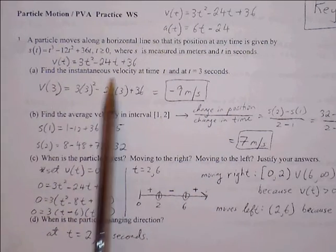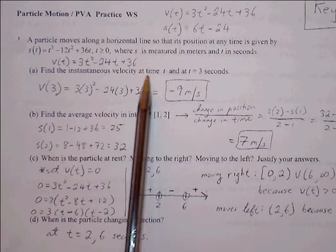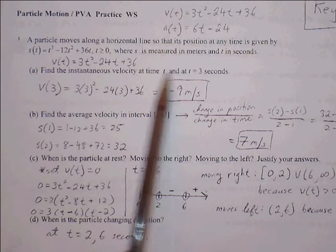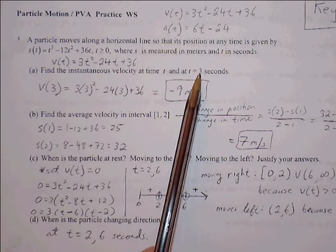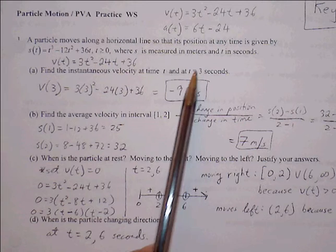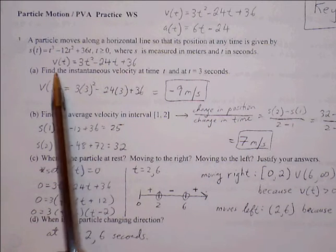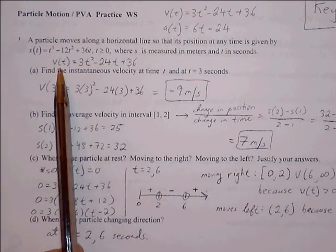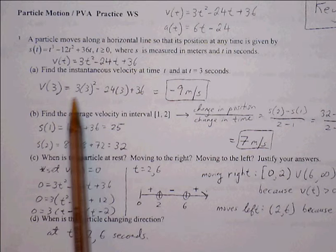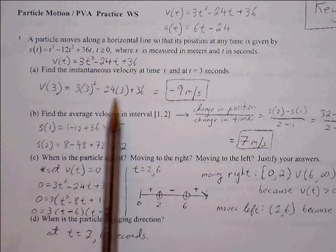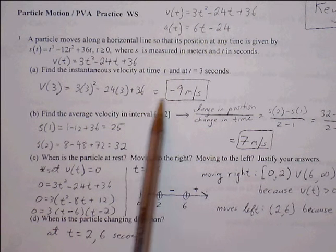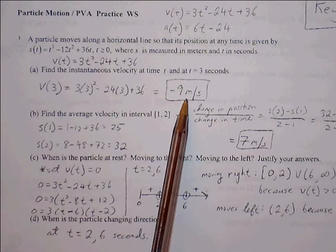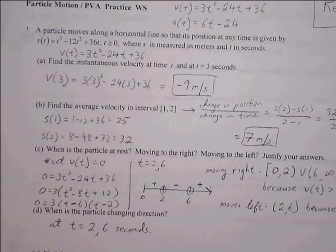Find the instantaneous velocity at time t — we found that as v of t. At 3 seconds, we plug 3 into the velocity function. Entering it all in, we get negative 9 meters per second.